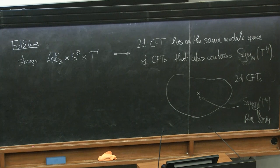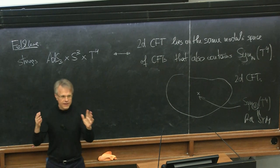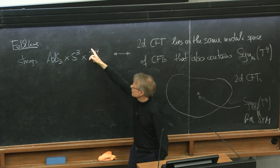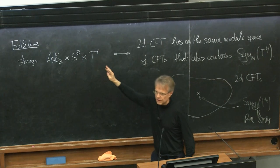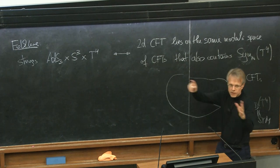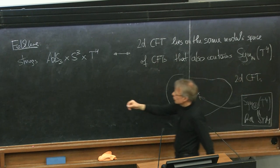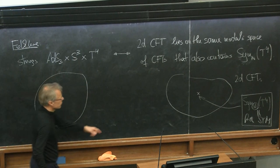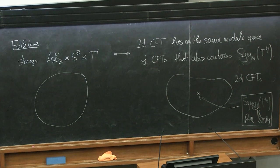The symmetric orbifold of T4 is one CFT in the moduli space, but it has many exactly marginal operators — parameters you can choose — and for whichever value you pick you get a CFT, so there is a whole moduli space. A question was raised: would there be an analogous statement replacing T4 with K3? Absolutely yes — K3 works the same way. I'm concentrating on the simplest case, T4, but you can replace it with K3, and in fact there are other versions too.